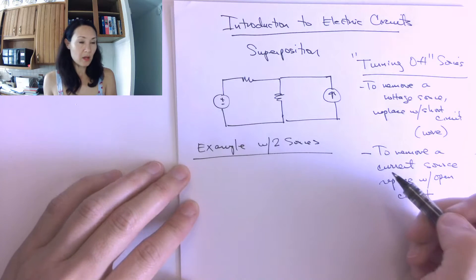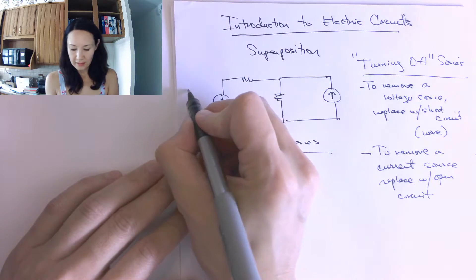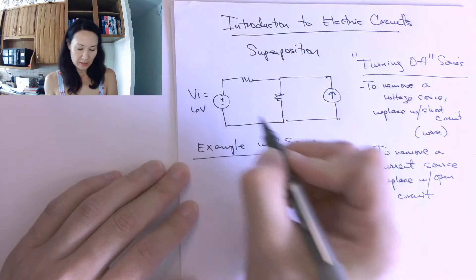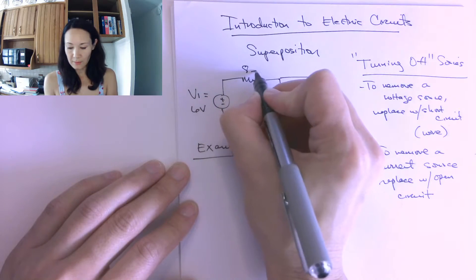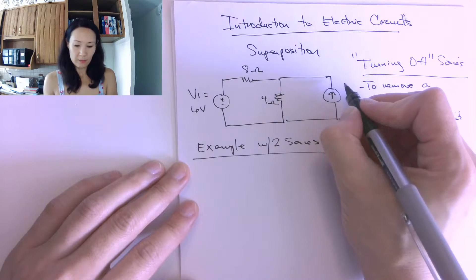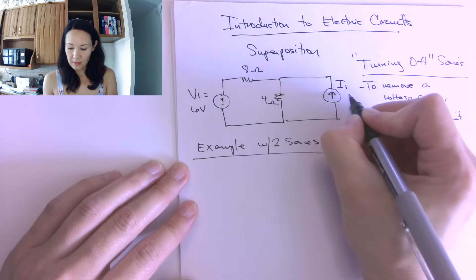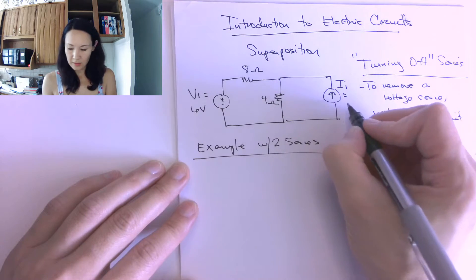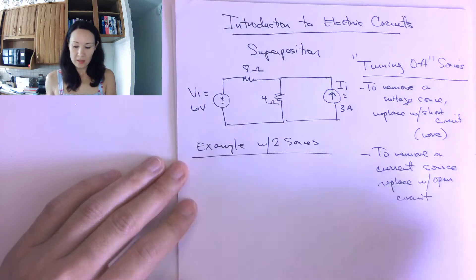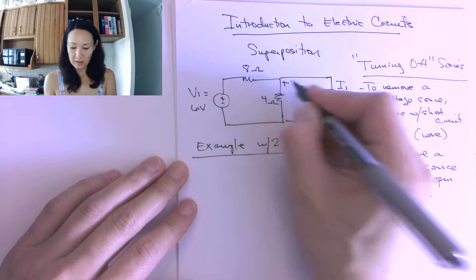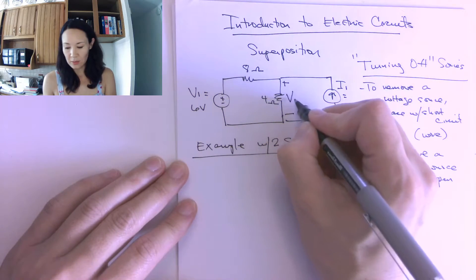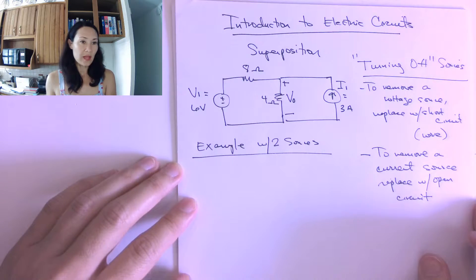Suppose this is our circuit. We've got two power sources. I'll let the voltage source be called V1, and let's let it be six volts. Suppose this is an eight ohm resistor, this is a four ohm resistor, and suppose this is I1, the current source — and I'll let that be three amps. What we're interested in is finding the voltage drop across the four ohm resistor, which I'll label as V0 or Vout.